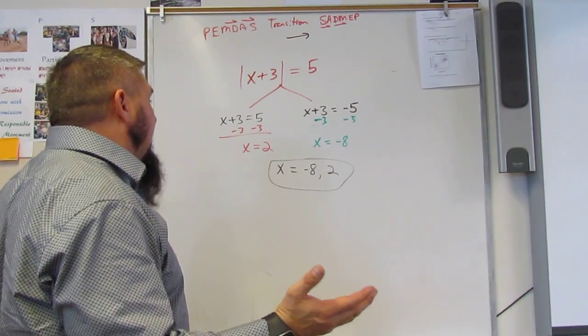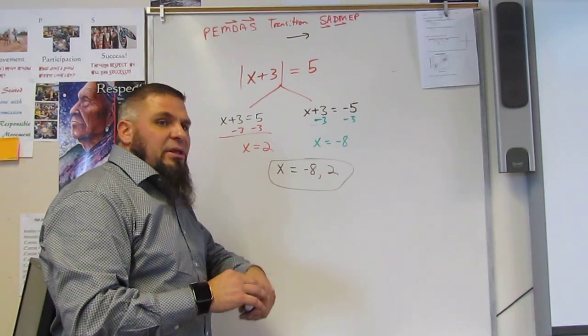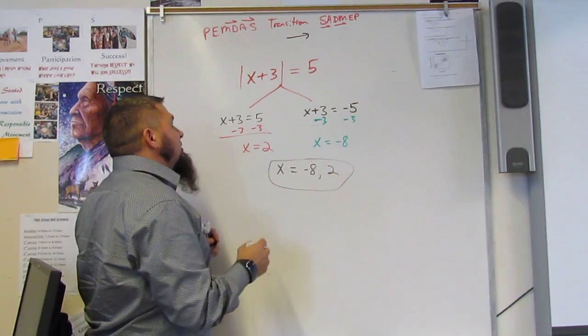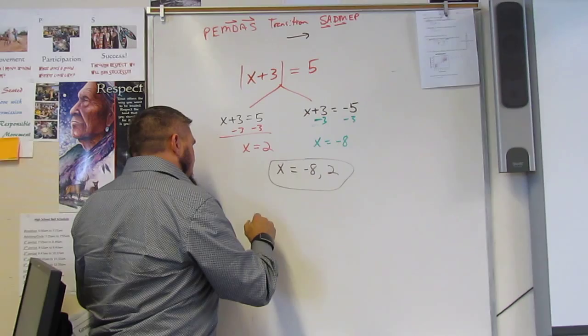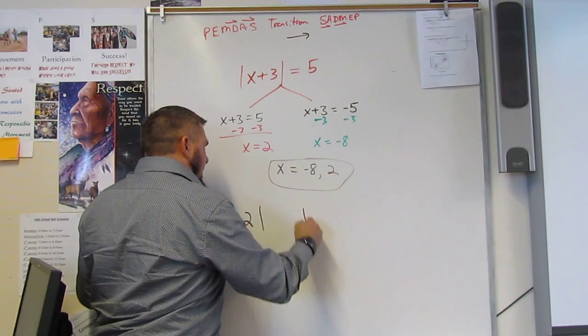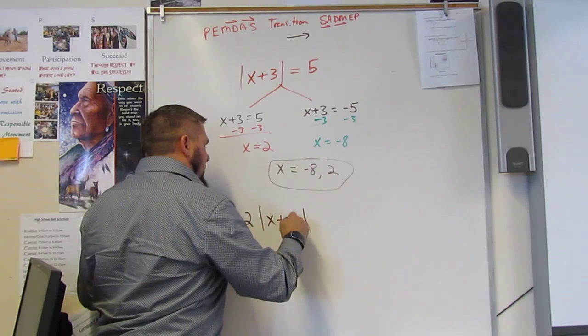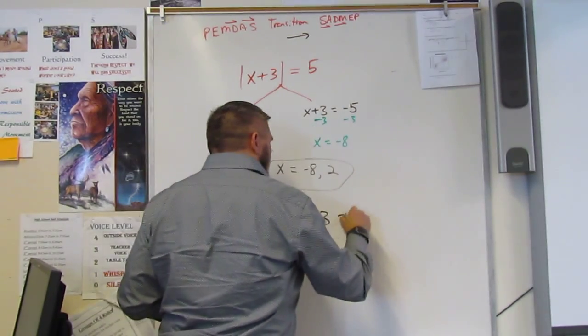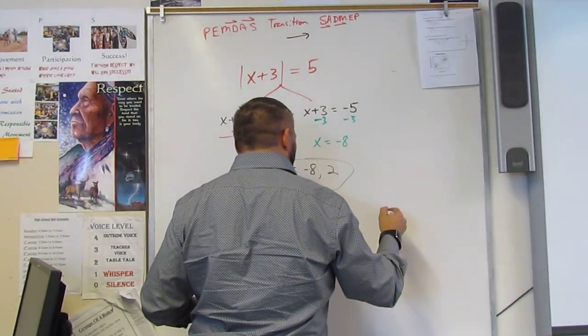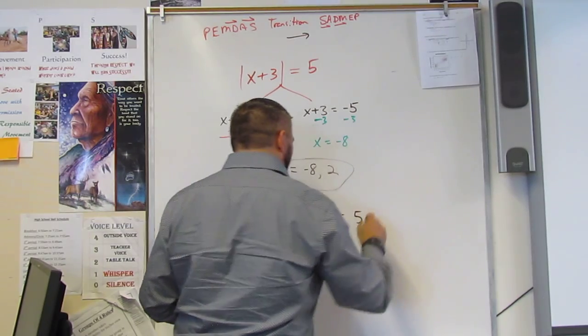And that's basically it. The only other thing you've got with absolute value is if you have, say, two times the absolute value of x plus 4 minus 3 equals 5.